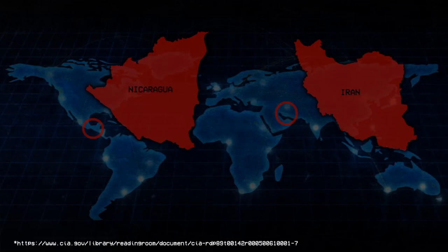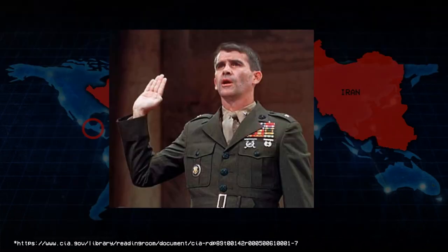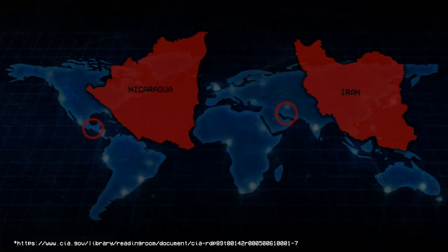Iran-Contra Scandal. Although the details have long been known, the Iran-Contra scandal finally captures the media's attention in 1986. Congress holds hearings and several key figures lie under oath to protect the intelligence community. CIA Director William Casey dies of brain cancer before Congress can question him. All reforms enacted by Congress after the scandal are purely cosmetic.